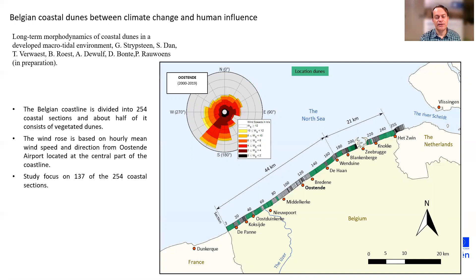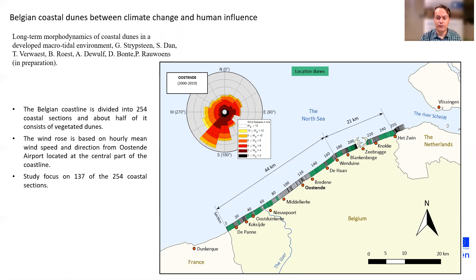What we've done in the frame of this project to study the Belgian coastal dunes will be presented from now on. We look at the long-term dynamics of the coastal dunes in a macro-tidal environment. If you look at this picture, you see that half of the coast doesn't have dunes — part of them were replaced by construction, but in some other parts they didn't exist due to harbors or other geographical features. The Belgian coast is divided into 254 coastal sections, and we analyze 137 of them which contain more or less active dunes.